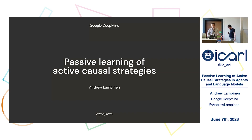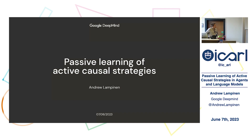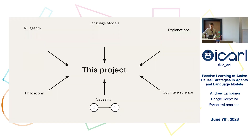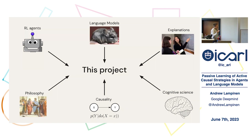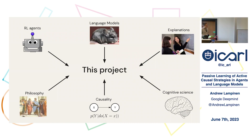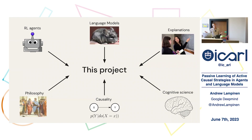Thank you so much for inviting me. So I'm going to tell you about a paper we just put out on passive learning of active causal strategies. I'm excited to tell you about this work because it really ties together a lot of the strands of research that I've been doing over the past couple of years: research on reinforcement learning agents, on language models, on what you can learn from explanations and causality, and connects to some of my interests in philosophy and cognitive science.